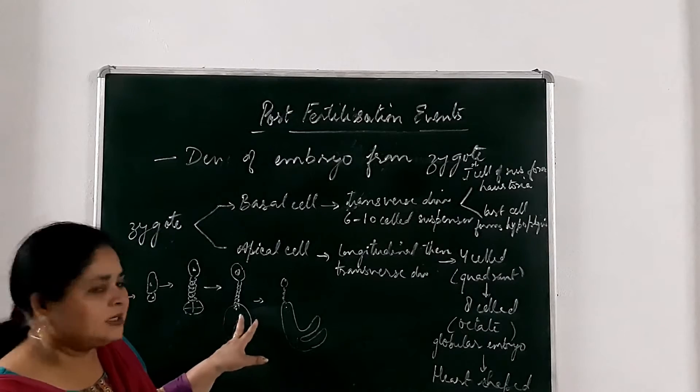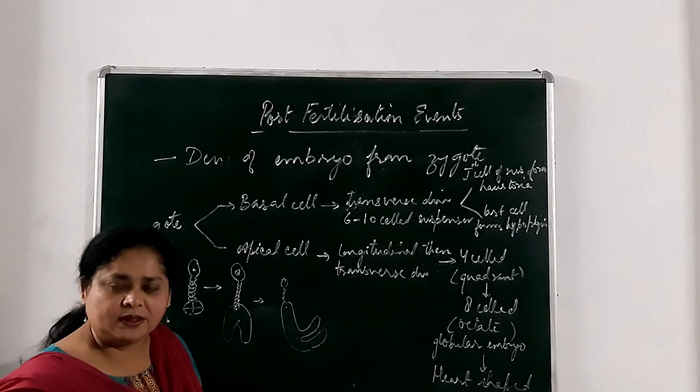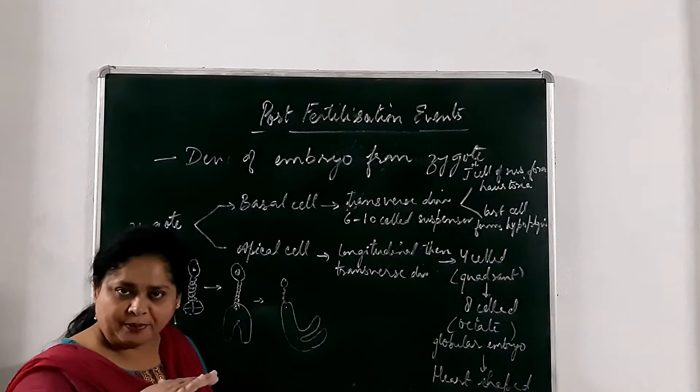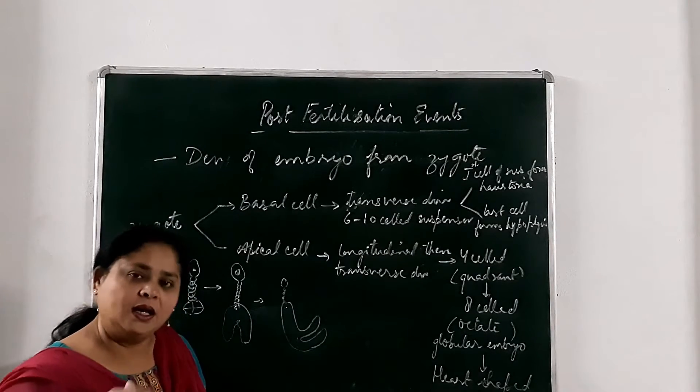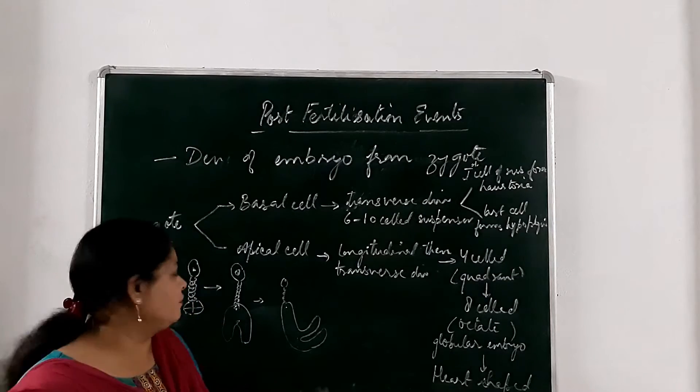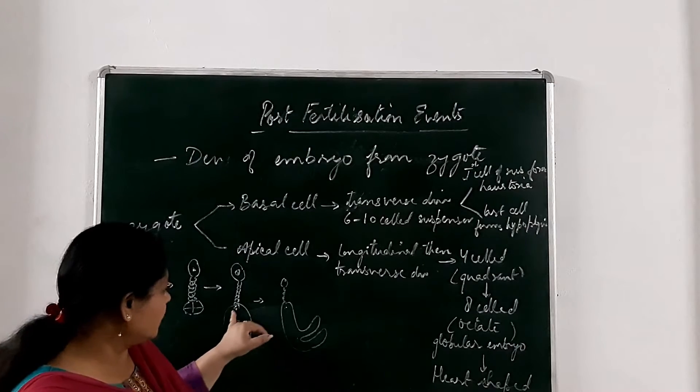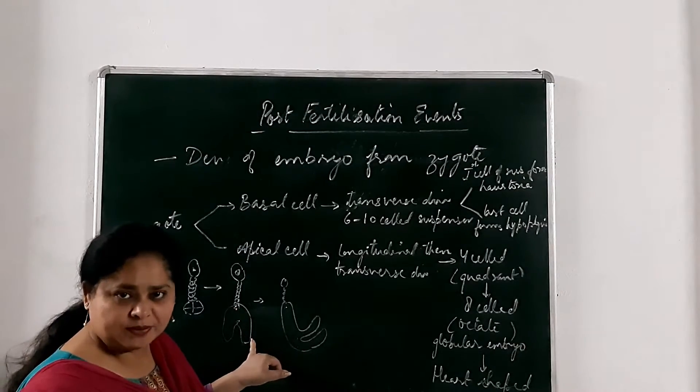Now after that, the cells in the globular embryo, they keep on dividing. The upper 4 cells form the radical region and the lower 4 cells form the plumule region. And then it becomes a heart-shaped embryo.